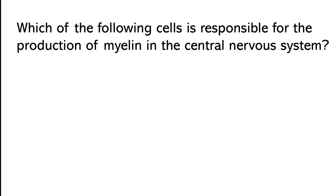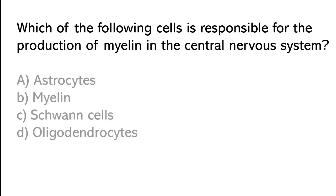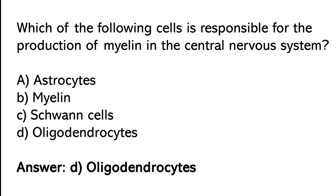Which of the following is responsible for the production of myelin in the central nervous system? Oligodendrocytes, Myelin, Schwann cells, Oligodendrocytes. So the correct answer is option D: oligodendrocytes.